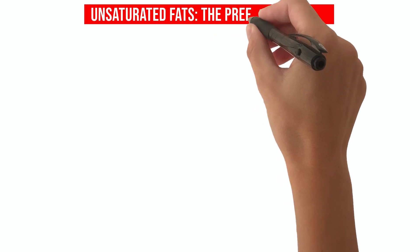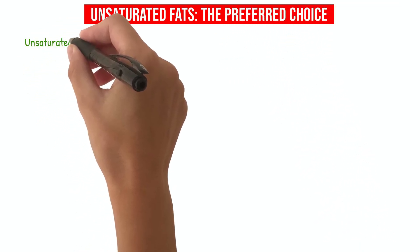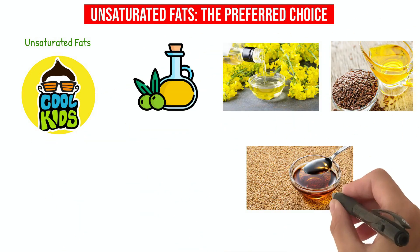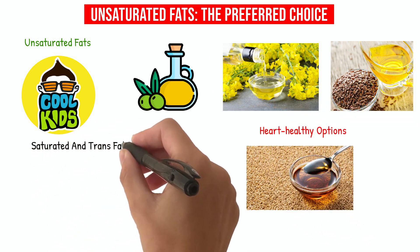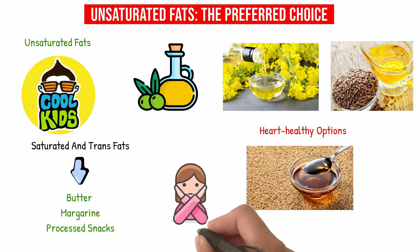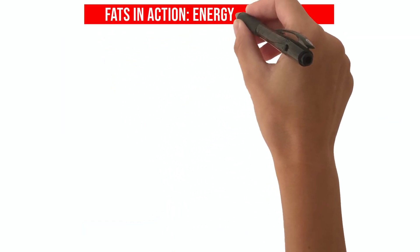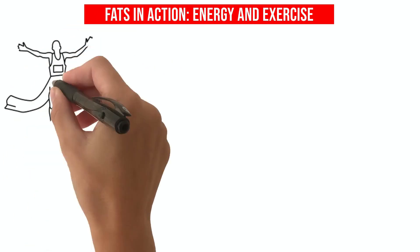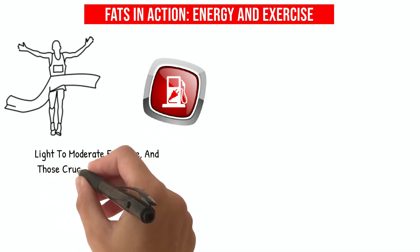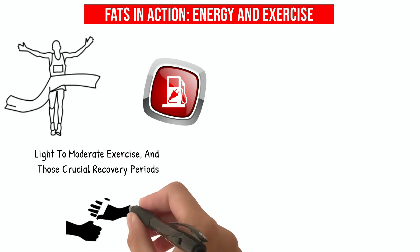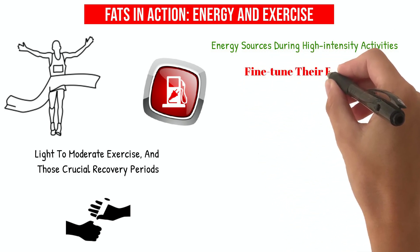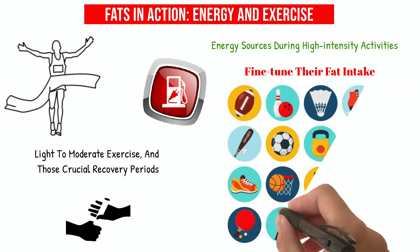Unsaturated fats — the preferred choice. In the world of fats, unsaturated ones are like the cool kids, found in oils like olive, canola, flax, and sesame — they're the heart-healthy options. Saturated and trans fats, found in items like butter, margarine, and processed snacks, are the fats we should keep at arm's length. Fats are the marathon runners of the energy world — the primary fuel during rest, light to moderate exercise, and recovery periods. However, they pass the baton to other energy sources during high-intensity activities. Athletes need to fine-tune their fat intake, experimenting with what works best for their body and sport.